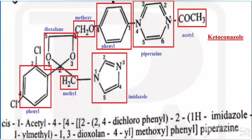In the first position of piperazine, we have acetyl. The fourth position is connected with phenyl, which is connected with methoxy. The carbonyl methoxy is connected with 1,3-dioxolane. The fourth position is connected with this carbon, and the second position is connected with two groups: one is a 2,4-dichlorophenyl, another one is methyl. That methyl is connected to imidazole. That is the structure for ketoconazole.